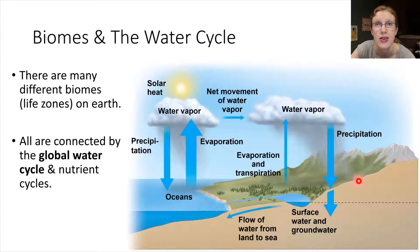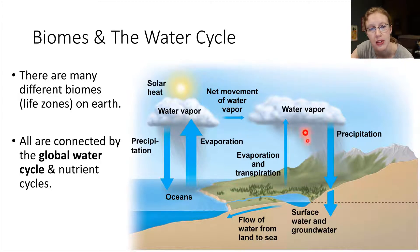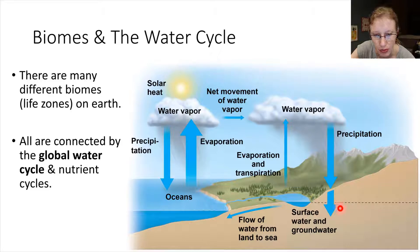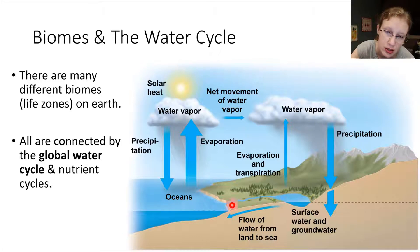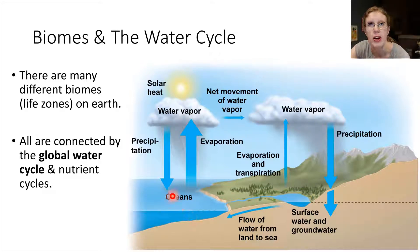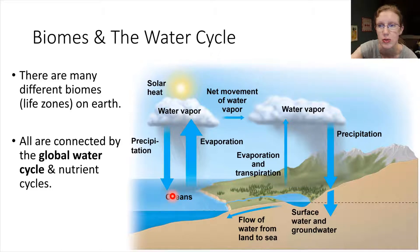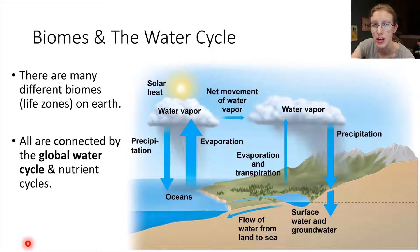Now we're on the land — different biomes than where we started. We started in the water, now we're on the land, same water. Rainfall occurs; some of that water will soak into the ground, and some may collect on the surface and end up leading back into the ocean. The water flows back into the sea, and then we're right back where we started. That's the water cycle, and it helps to connect all of these different biomes together.